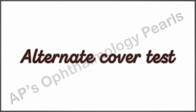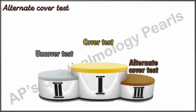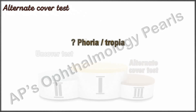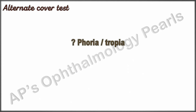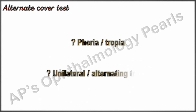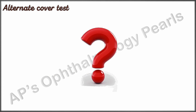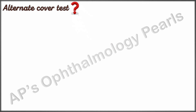The alternate cover test must only be performed after the cover-uncover test, as it is not diagnostic on its own. For example, it cannot differentiate between a phoria and a tropia, but rather shows the total deviation. It also cannot differentiate between a unilateral and an alternating tropia. So why do we do this test?